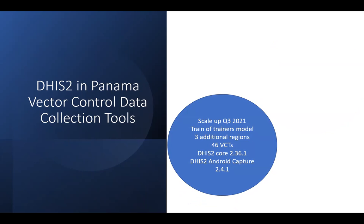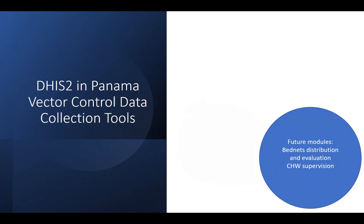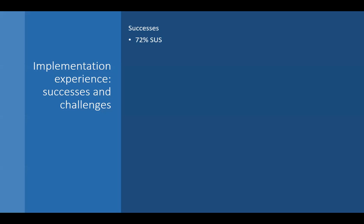The scale up started in quarter three of 2021. We have implemented the trainer-trainer model and are adding three regions to the deployment to have a total of 46 working directly with the DHIS2 Android capture application. As of today the implementation uses DHIS2 version 4 and we will use the DHIS2 Android Capture 2 version in the future. Based on the results of the pilot, the Ministry was very interested in implementing net distribution, as well as CHW supervision, in the DHIS2 data collection tool.